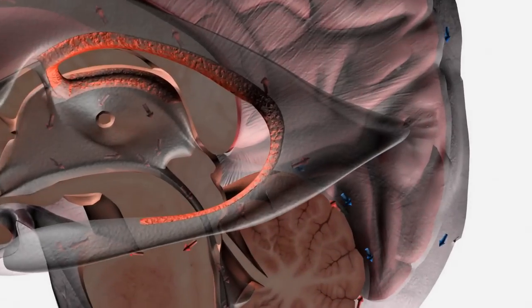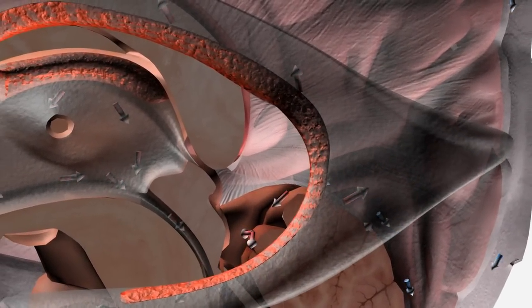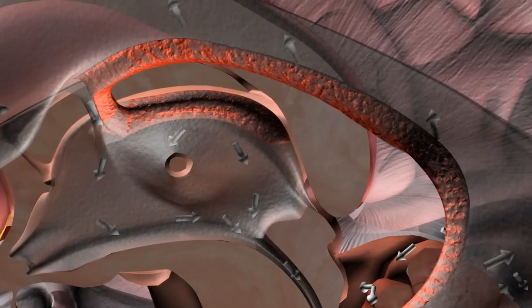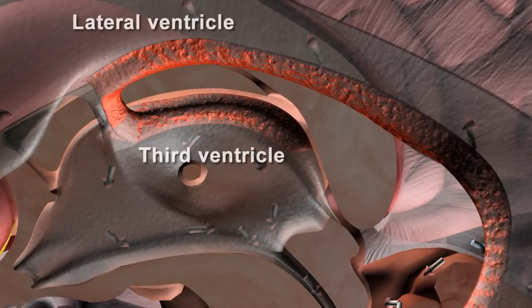It is produced in the choroid plexus, shown here in red, which covers the floor of the lateral ventricle and the roof of the third ventricle.